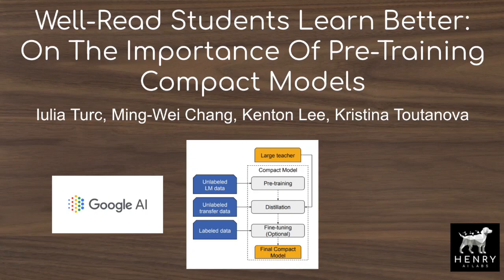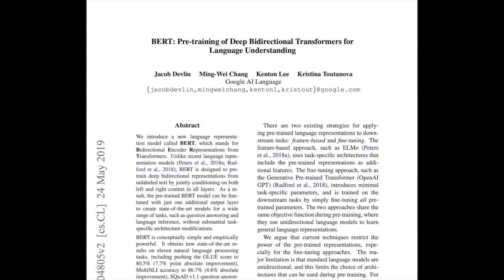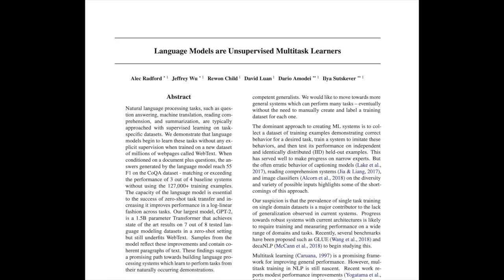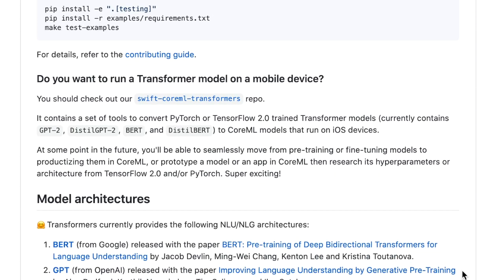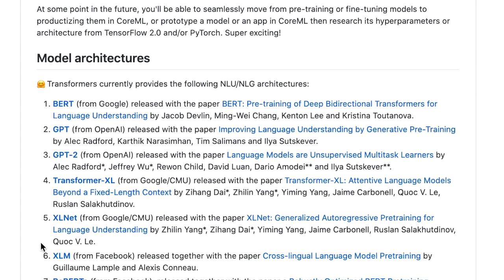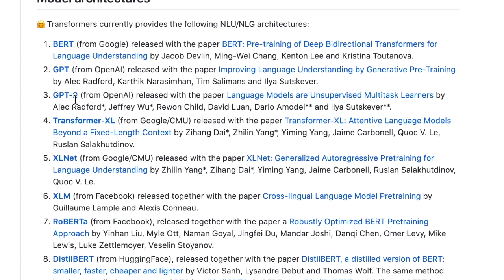This video will explain 'Well-Read Students Learn Better' from researchers at Google AI. Tons of pre-trained transformer models like BERT, RoBERTa, T5, or GPT-2 have been open-sourced. We can use tools like the Hugging Face Transformers library to take these models and use them for whatever natural language processing task we're interested in.